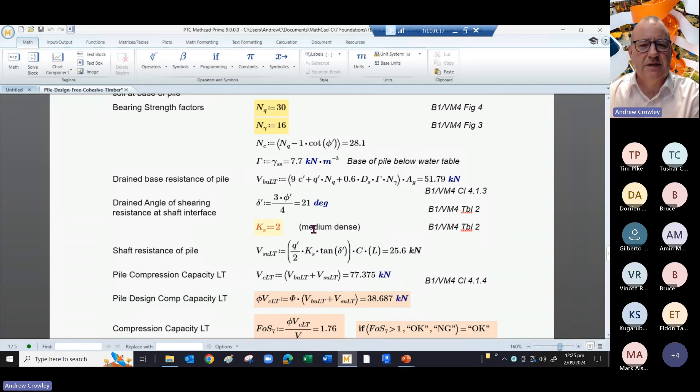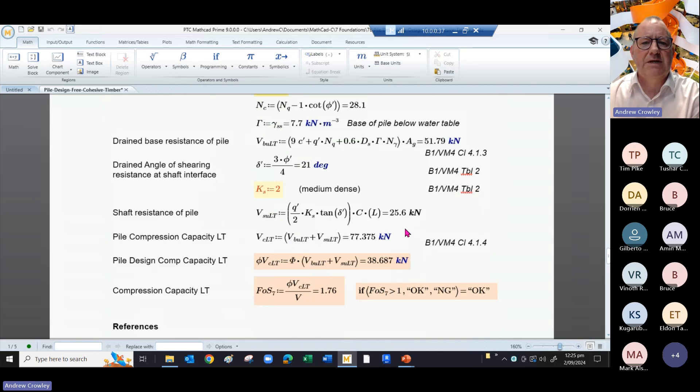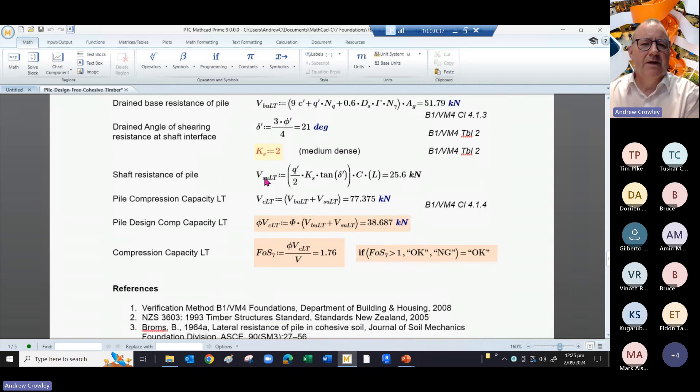Ks is 0.62 for medium dense, so our shaft resistance of the pile is 25.6 kilonewtons.